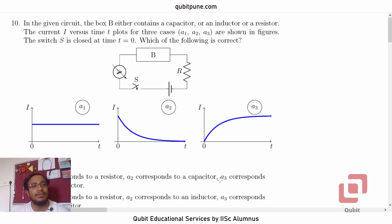And in this video we will be solving question number 10 which is based on the response to external voltage by a resistor, an inductor and a capacitor. The problem says in the given circuit the box B either contains a capacitor or an inductor or a resistor.